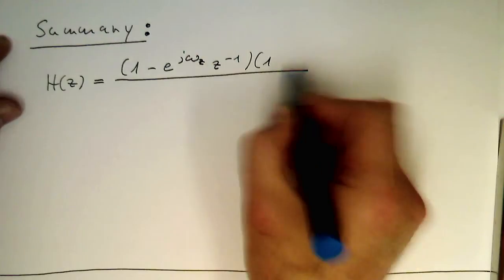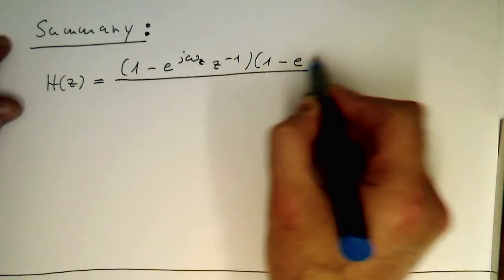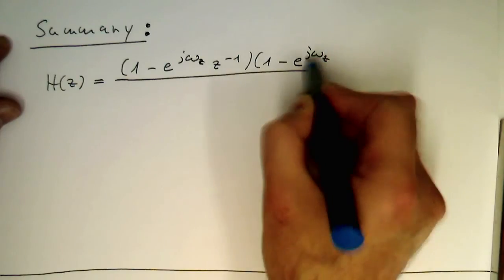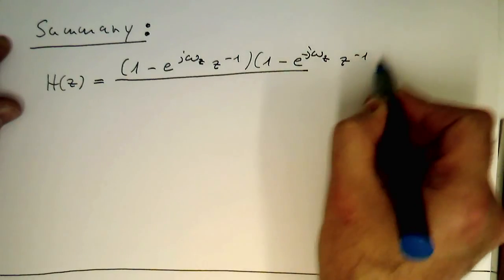And then 1 minus e to the minus j omega z, z to the minus 1.